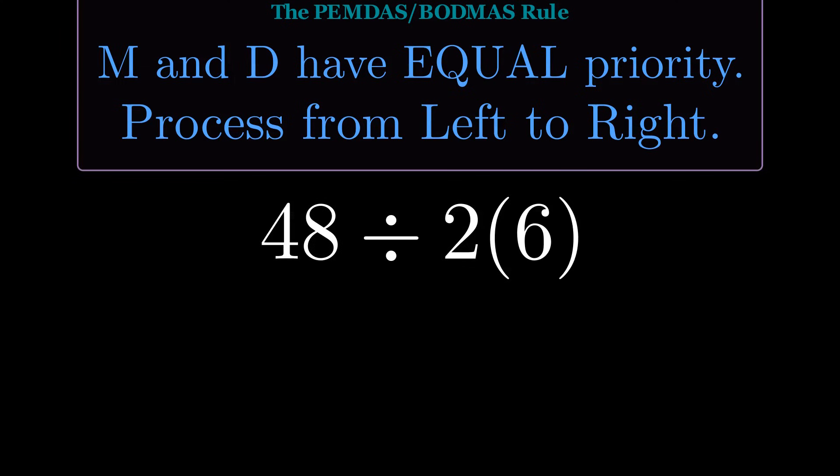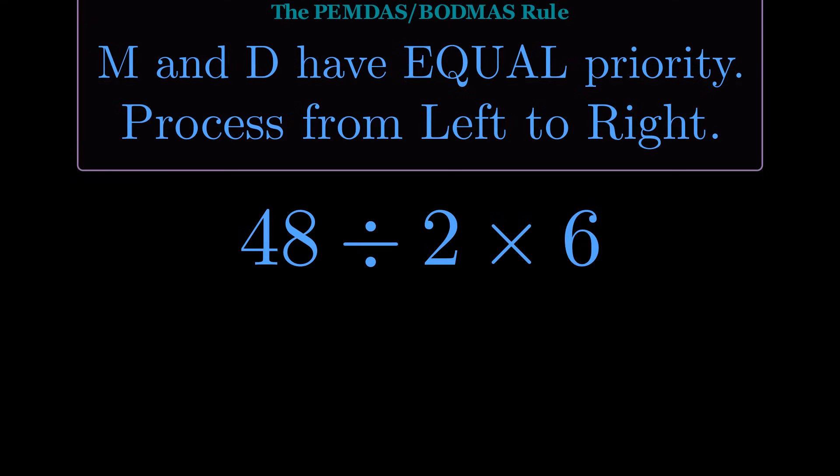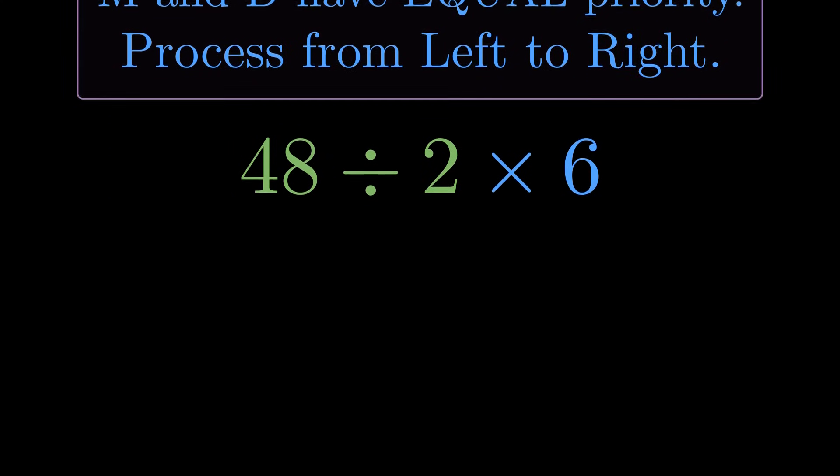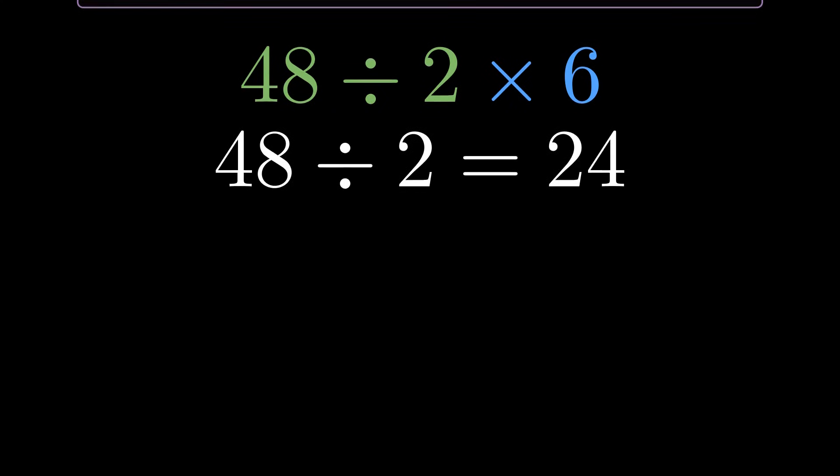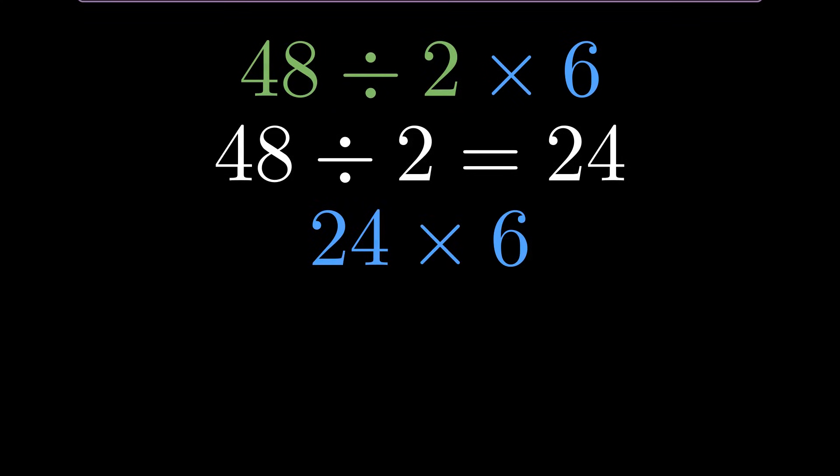Starting from the same place, let me make the multiplication explicit. Now it's clear. We have 48 divided by 2 times 6. Following left to right, the first operation is 48 divided by 2. 48 divided by 2 equals 24. Now we have 24 times 6, which equals 144. A completely different answer.